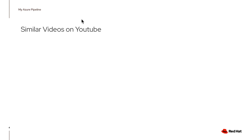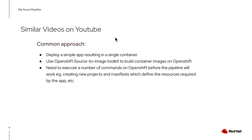These videos that I've watched have three things in common. One, they deploy a simple app resulting in a single container. Two, they use OpenShift source-to-image toolkit to build container images on OpenShift. And three, they need to execute a number of commands on OpenShift before the pipeline can work — for example, creating new projects and manifests which define the resources required by the app.